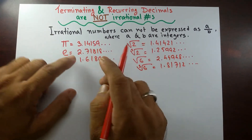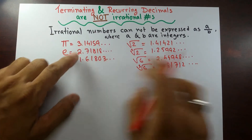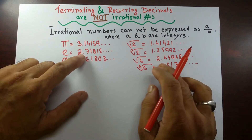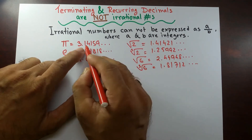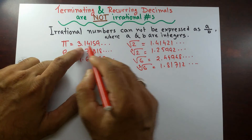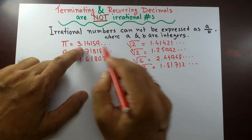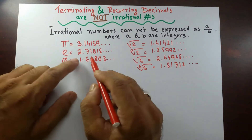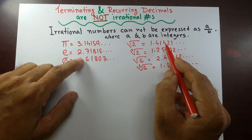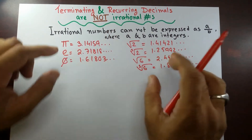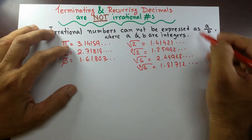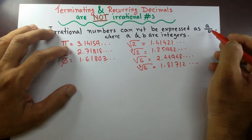You can see that these irrational numbers have an infinite number of decimal places, and those decimal values are not repeating. So these are irrational numbers — they cannot be expressed as a over b.